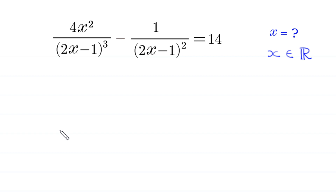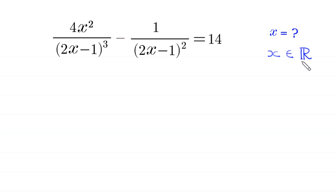Hello everyone, welcome to how to solve this very nice algebra equation: (4x² / (2x-1))³ minus (1 / (2x-1))² = 14. We need to find all possible values of x where x is a real number. Let's start.